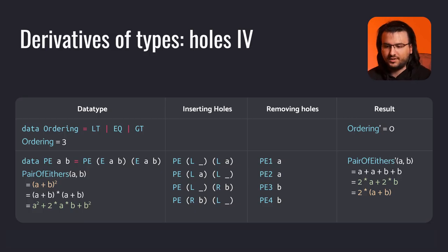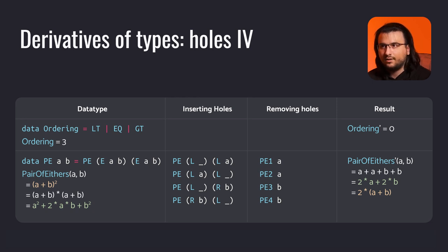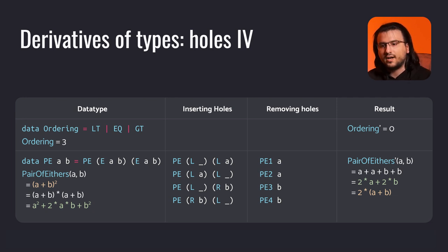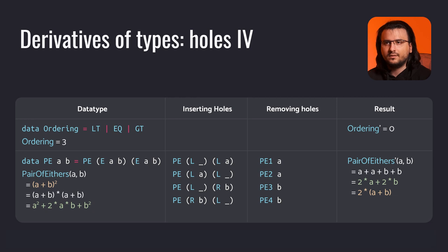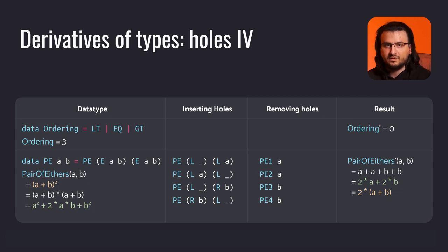Ordering has three nullary constructors and the type variable a is not present anywhere, so we get 0. Finishing off with the pair of eithers: its math expression is (a plus b) squared. Since we're operating on a pair of eithers, we can have two lefts, a left and a right, a right and a left, and two rights. We discard the last case since both contain values of type b with no holes to place. For one left and one right, we place one hole in the left for each of the two cases. In the case of two lefts, there's one hole to place for each left. After removing the holes, our new data type is represented by 2 times a plus b.